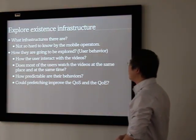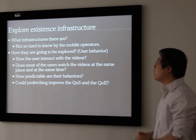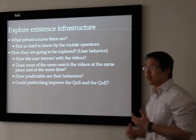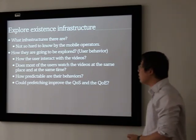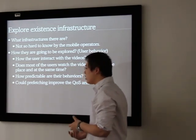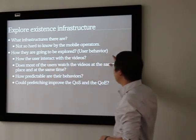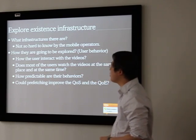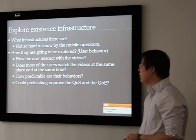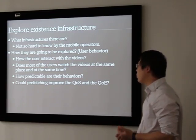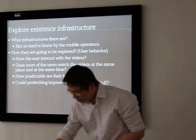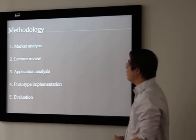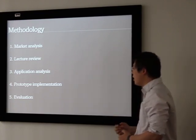How to explore existing infrastructure more efficiently. By one side, the mobile operators should know what infrastructure they have, with how much bandwidth they have in a concrete moment. And this is a study that can be done by themselves, because they manage the resources. And by another side, they should know who and how is consuming the data. The question right now for user behavior is like, how the user interacts with the videos. Do most of the users watch the videos at the same time and the same place? How predictable are their behaviors? Could prefetching improve the quality of service and quality of experience?